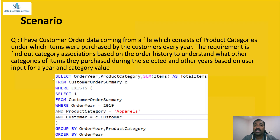Knowing these associations, you can show customers offers related to those categories or give bundled combo offers. For example, if a person is buying sports shoes, there's every chance they will also buy sports apparel. To find this, you need a history of what categories they purchased and what other categories they bought alongside a particular category.